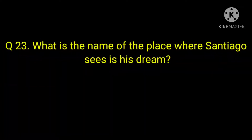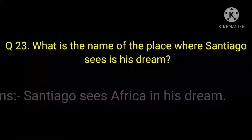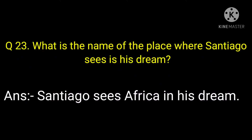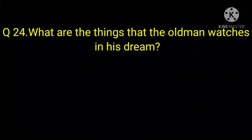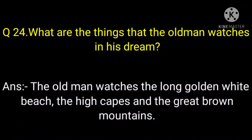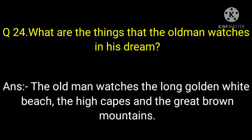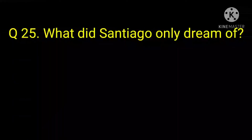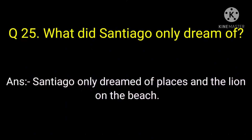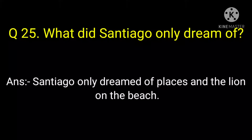Next question: What is the name of the place where Santiago sees in his dream? What does the old man watch in his dream? The old man watches the long golden-white beach, the high cape, and the red-brown mountains. Santiago only dreamed of a place and lions on the beach of Africa.